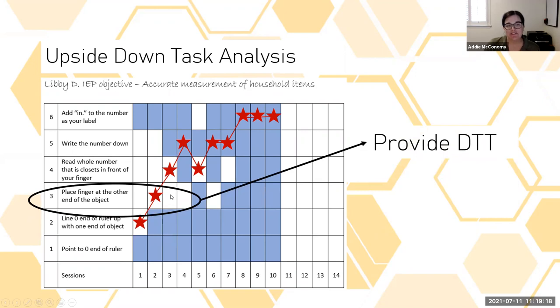In addition to that, it allows us to easily identify areas where the student might need more support. For example, in this fictional data, we see here that this student had four instructional sessions where they were not able to place their finger at the end of the object. So in that example, I would provide discrete trial training for that specific task in order to support the student to master that task and not allow it to be a barrier to completing the entire chained task.